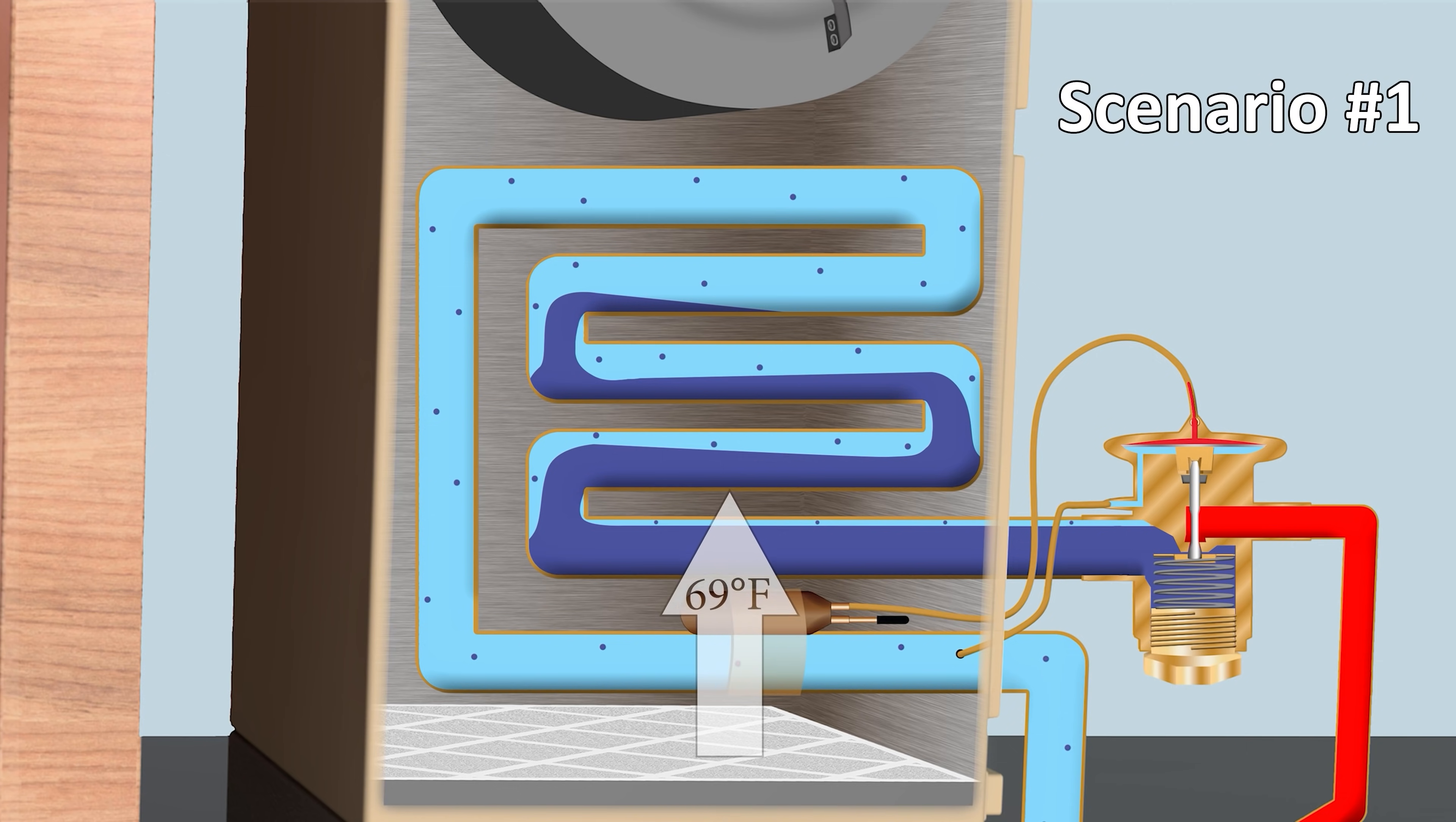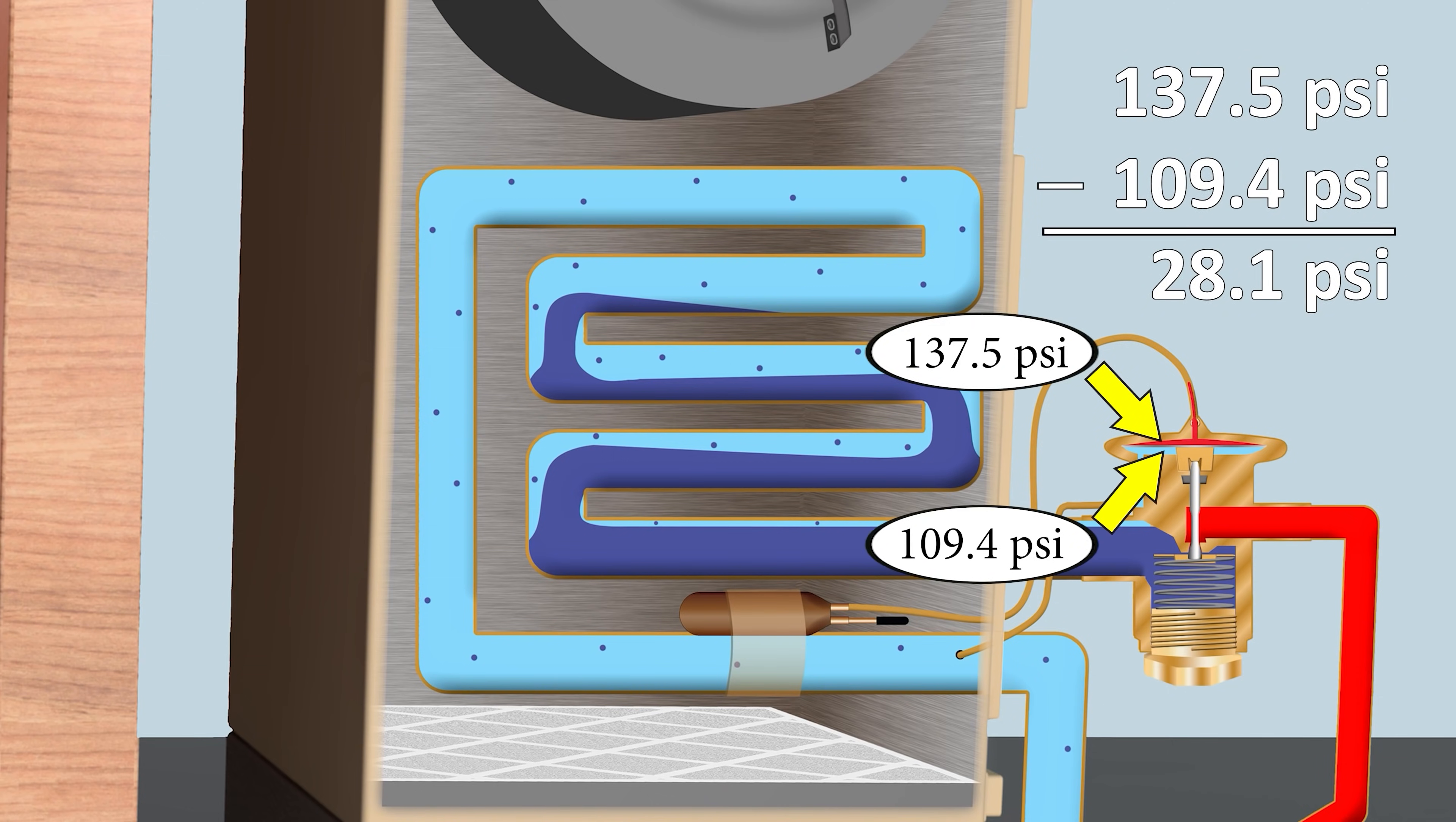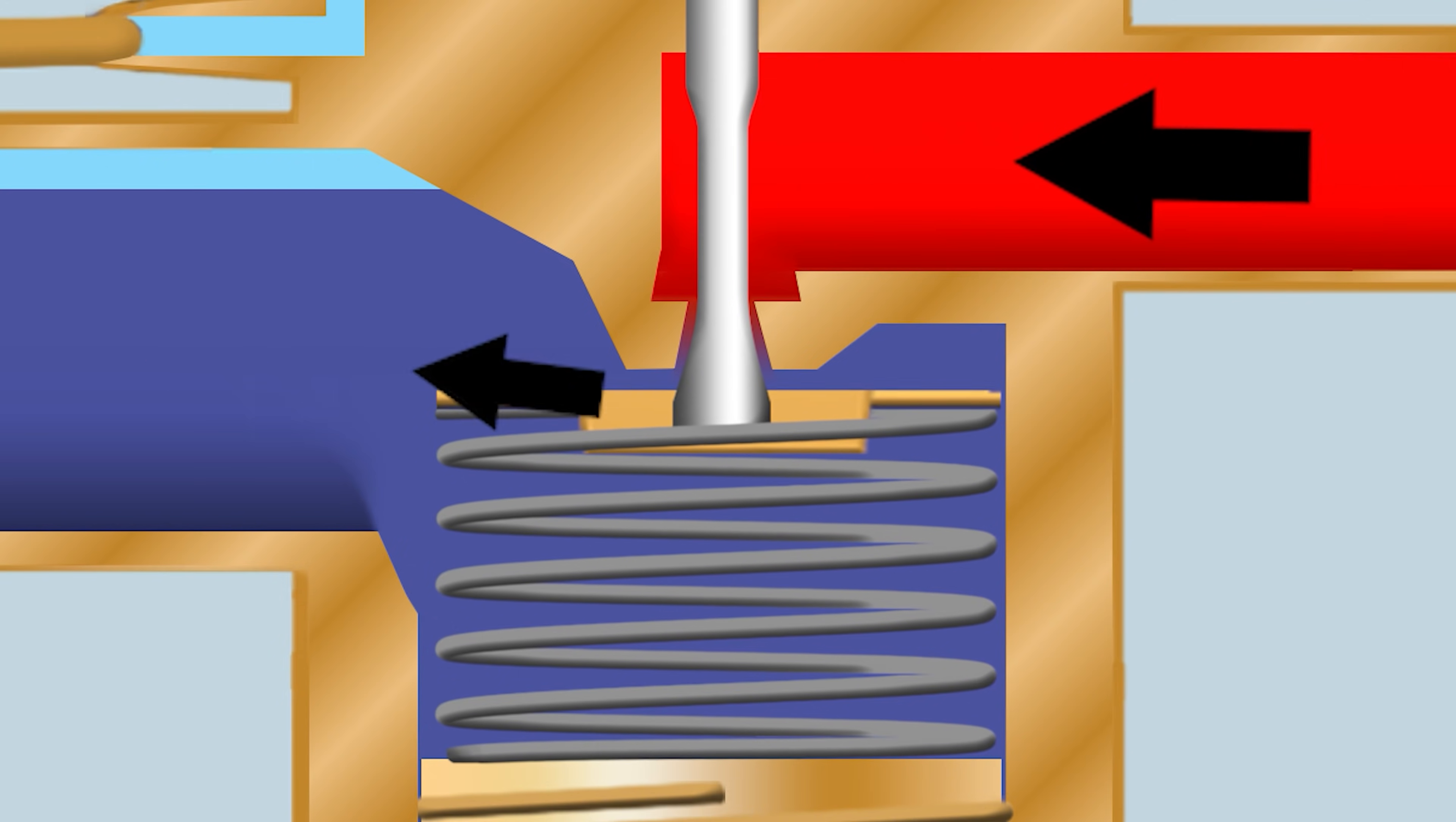Scenario one is where you have 71 degrees dry bulb temperature—it's low humidity, so that's the air temperature crossing that coil. In this case, we have a bulb temperature on the vapor line of 48 degrees. If we were to take a PT chart, we take 48 degrees and convert it to a saturated pressure of 137.5 psi. Then we also take an external equalization pressure of 109.4. So we take 137.5 minus 109.4, and we equal 28.1 psi as the spring pressure. Remember we're looking at P1 equals P2 plus P3. We're able to solve that equation to determine what the spring pressure is. You see this little tiny opening where the refrigerant is coming through the TXV. In the next two scenarios, there's going to be a higher heat load, so the opening in the middle of the TXV is going to be larger.